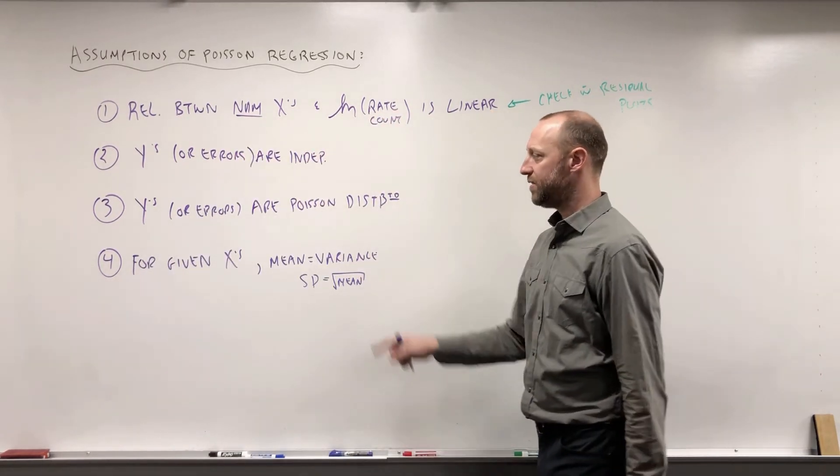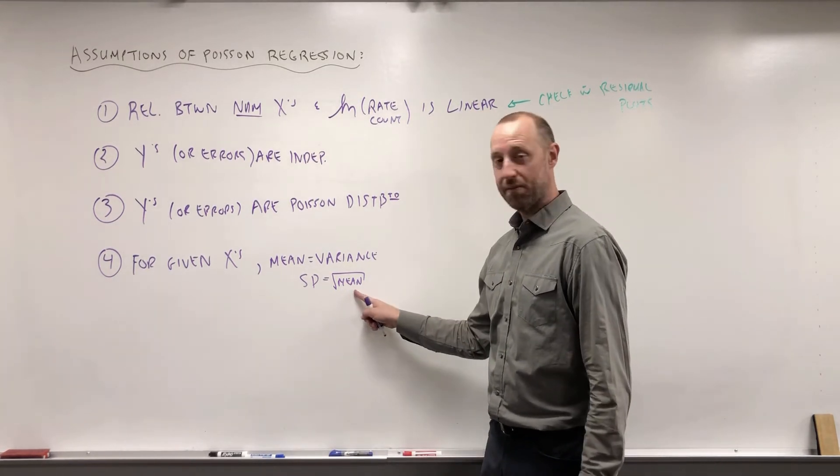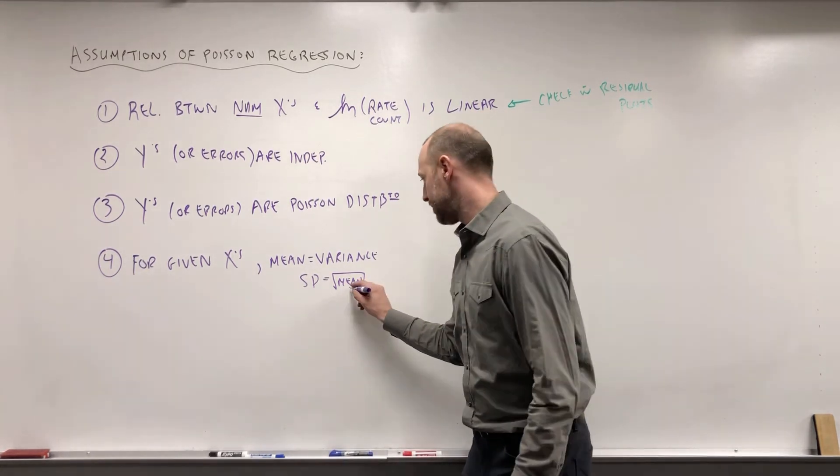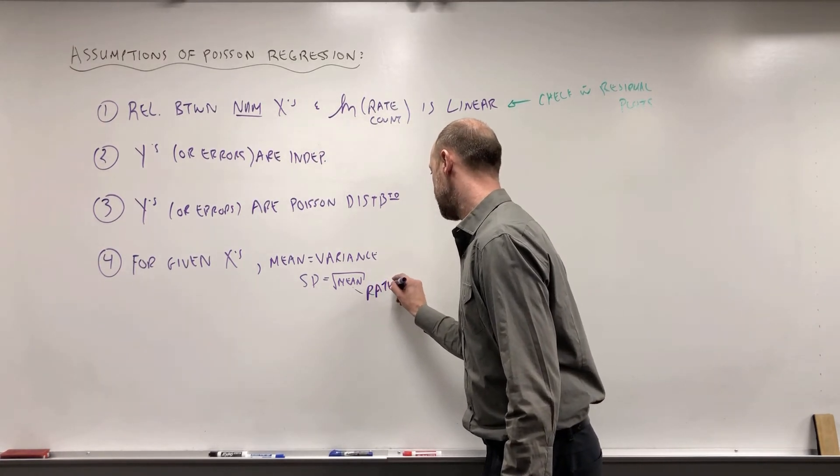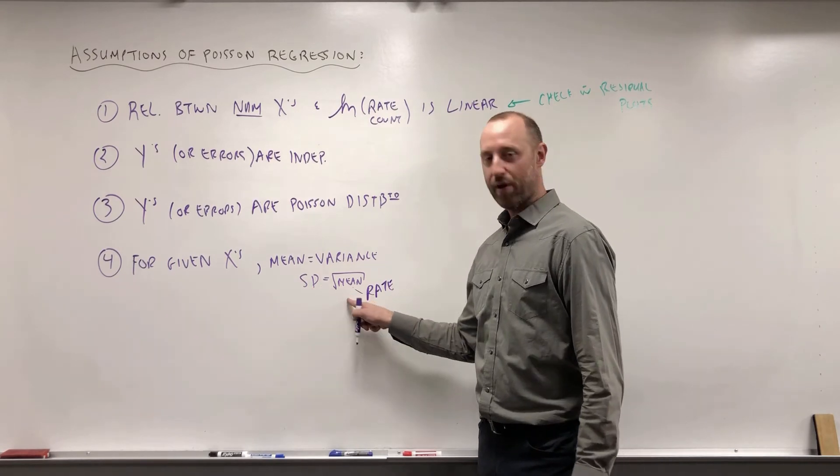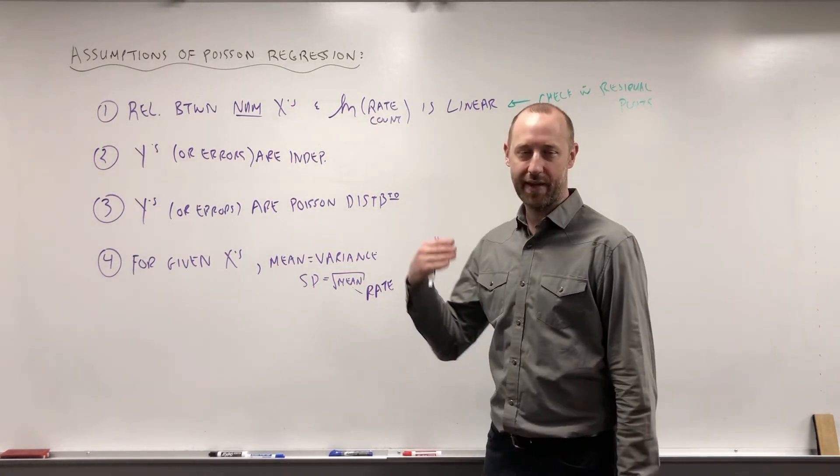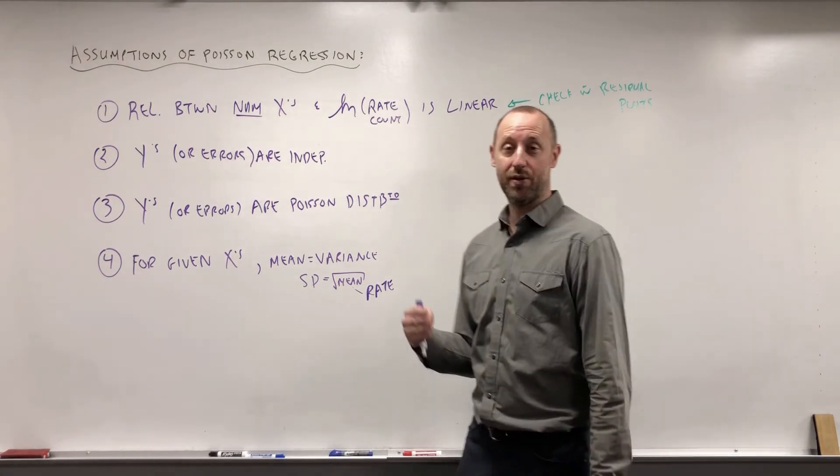So what I mean by that is, for a given set of x values in the model, we can estimate what's the mean or the rate, or I should say mean or rate. What's the rate at which events occur? And the standard deviation is the square root of that rate. So again, variability is not constant. As the rate increases, so does the variability.